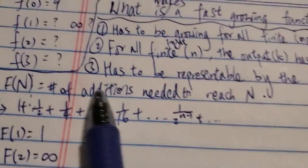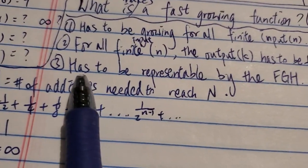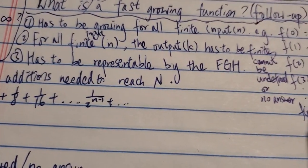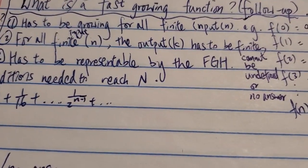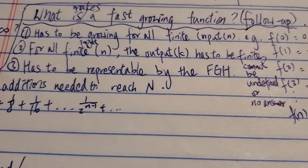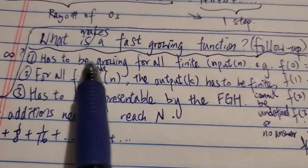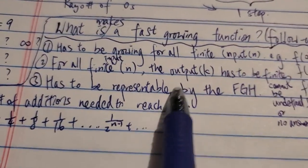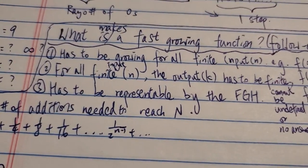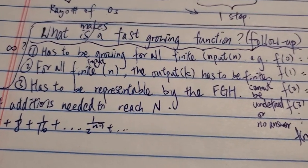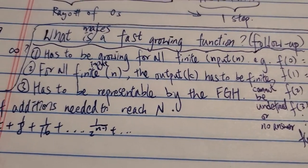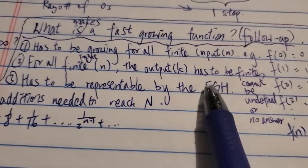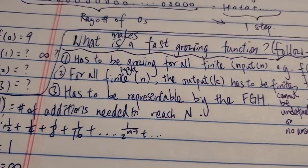And then the third point is that the function has to be representable by the fast-growing hierarchy. So if it's not representable, or if it cannot be measured by the fast-growing hierarchy, it's not a fast-growing function. I mean, a few people kind of suggest that, but I'm not sure, I guess it's debatable, because for some functions such as RAIL function, or even BCB, some people argue that it's not quite representable, at least not fully representable, or measurable by the fast-growing hierarchy, especially RAIL's function.